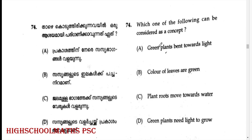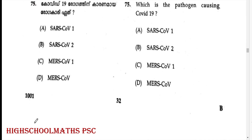Which one of the following can be considered as a concept? Answer: Option D. Plants do not bend towards light. The leaves of plants are green. Plants absorb water through roots. The intended concept answer is Option D.